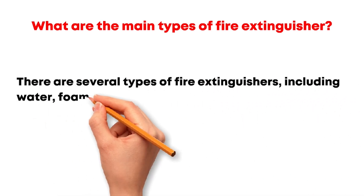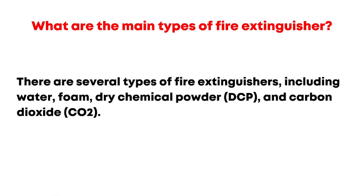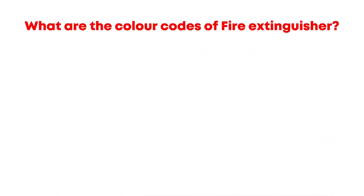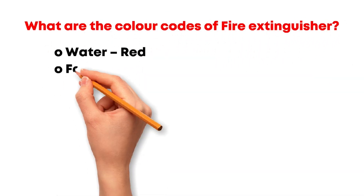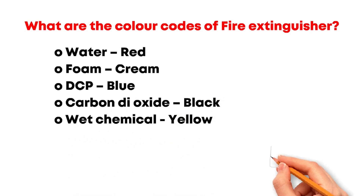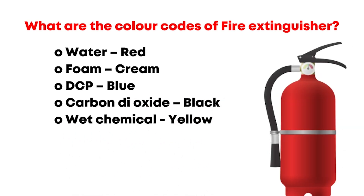What are the main types of fire extinguisher? There are several types, including water, foam, dry chemical powder (DCP), and carbon dioxide (CO2). Each type has a specific color code: water is red, foam is cream, DCP is blue, CO2 is black, and wet chemical is yellow.